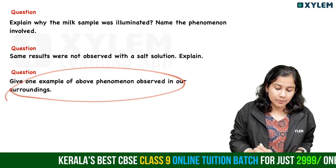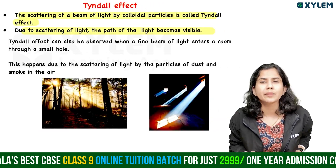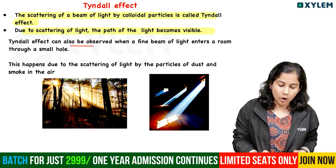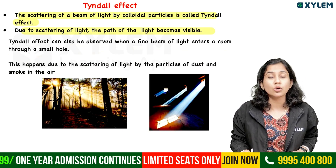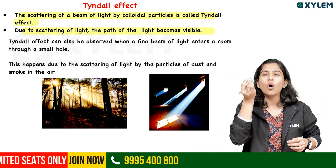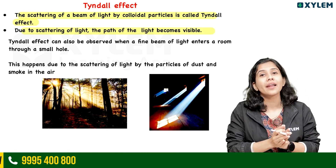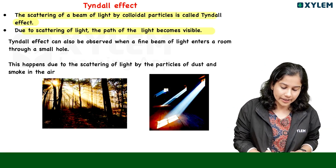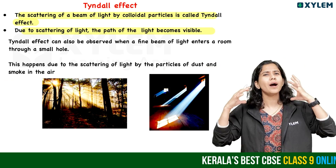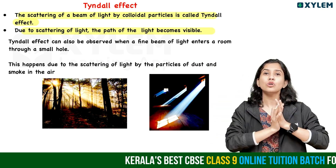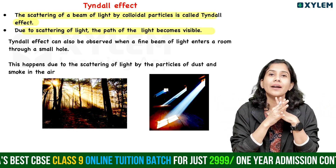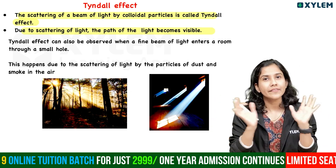The next question is: give one example of the above phenomenon observed in our surroundings. It can be observed when a fine beam of light enters a room through a small hole. This is due to the scattering of light by particles of dust and smoke in the air - that is why the light rays become visible.